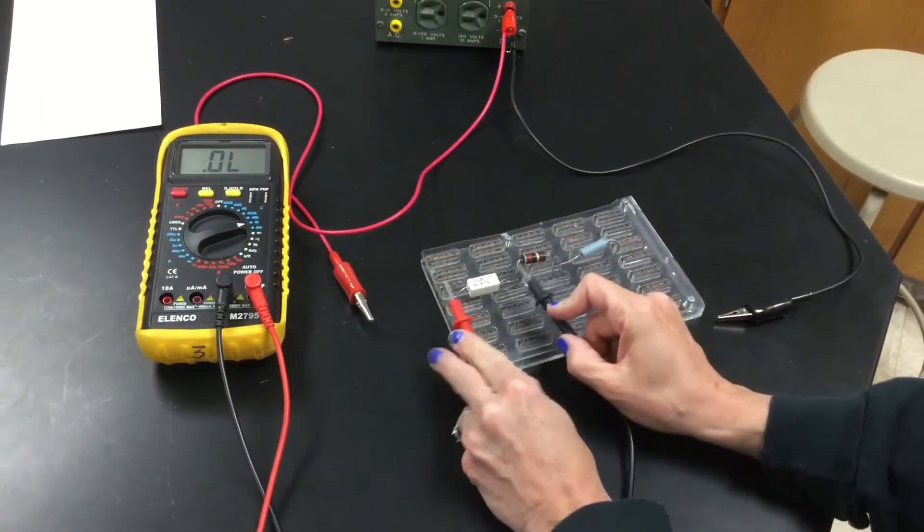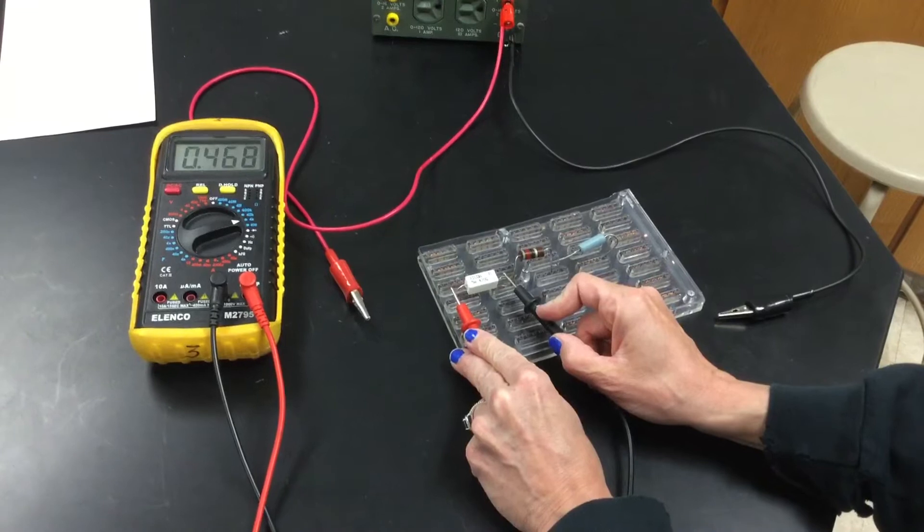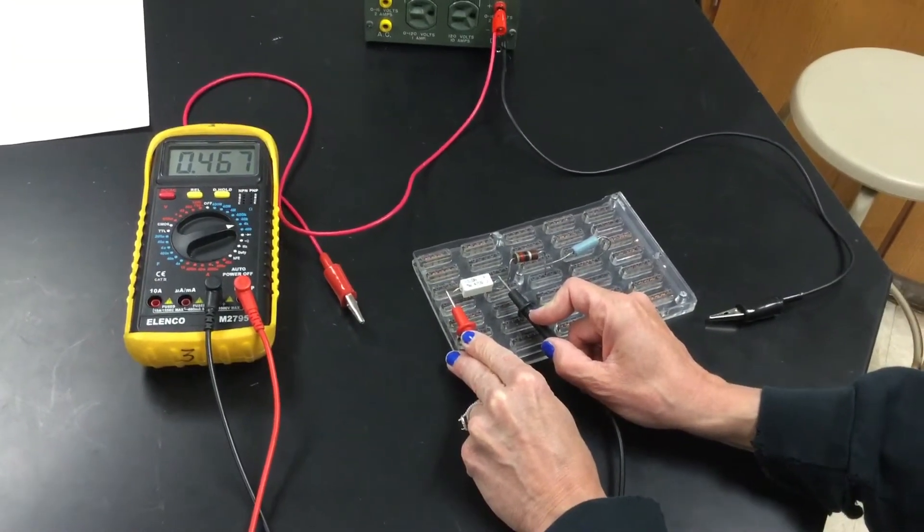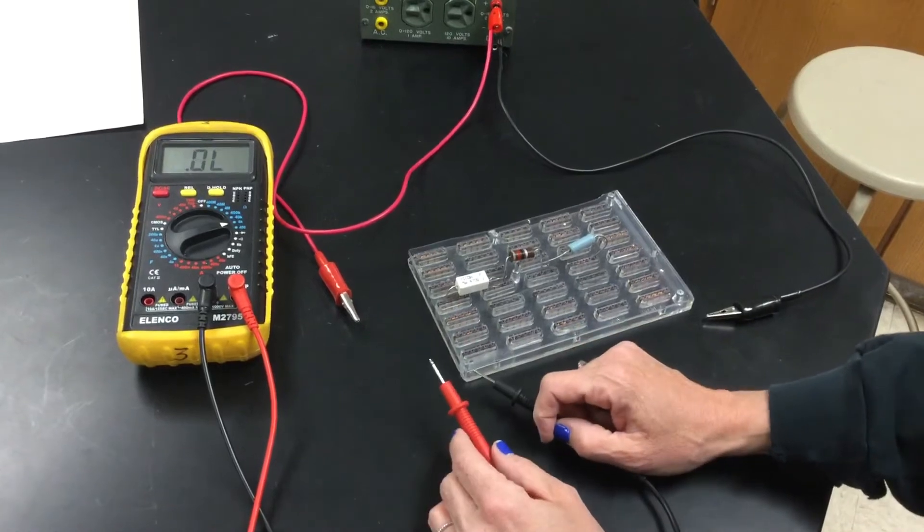It's now reading kilo-ohms. And so if I were to attach here, I've got 0.468 kilo-ohms, which is 468 ohms.